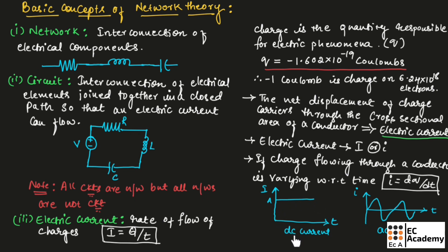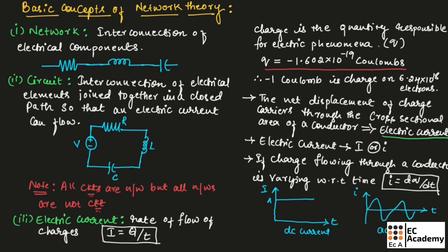There are two types of current. First one is DC current and second one is AC current. When the magnitude and direction of current flowing in an electrical element does not change with respect to time, it is known as direct current. If current in an electrical element has a continuously varying magnitude with respect to time and also changes the direction of flow, it is known as AC current.